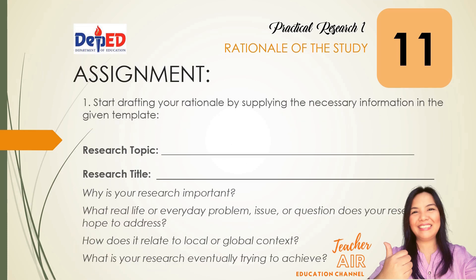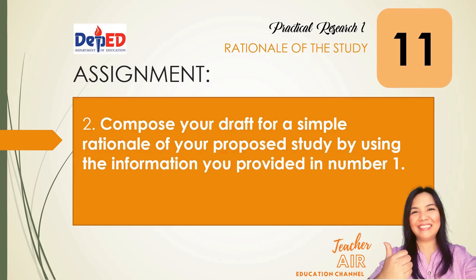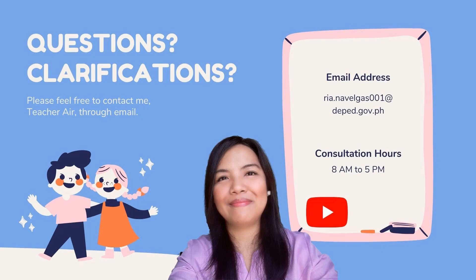At this point, you are heading your way to writing the contents of your research paper. Answer this assignment. Number one: start drafting your rationale by supplying the necessary information in the given template — write your research topic, your research title, why your research is important, what real-life or everyday problem, issue, or question your research hopes to address, how it relates to local or global context, and what your research is eventually trying to achieve. Number two: compose your draft for a simple rationale of your proposed study using the information you provided in number one. Any questions or clarifications? Feel free to contact me through email at ria.novelga001@deped.gov.ph. You can contact me between 8 a.m. to 5 p.m.